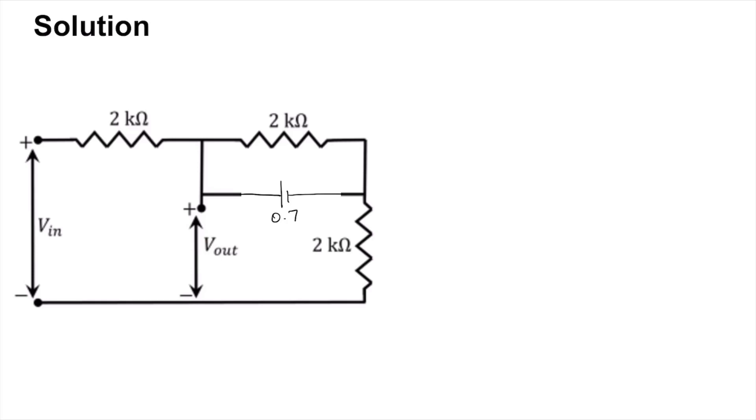So what can you give as the value for Vout? Let's assume that you have current flowing over here, so the same current I will be flowing over here.